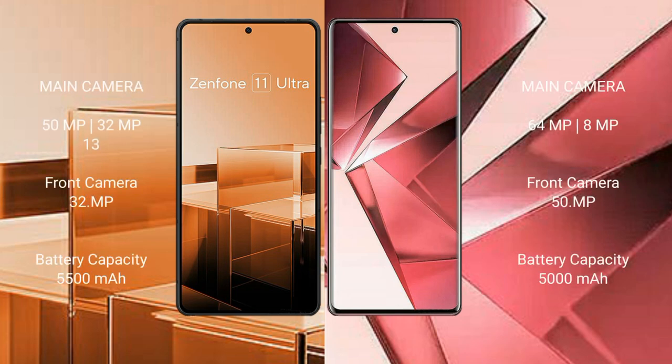The Asus Zenfone 11 Ultra features a triple rear camera setup: 50MP, 32MP, and 13MP, with a 32MP front camera. The vivo V29e features a dual rear camera setup: 64MP and 8MP, with a 15MP front camera.